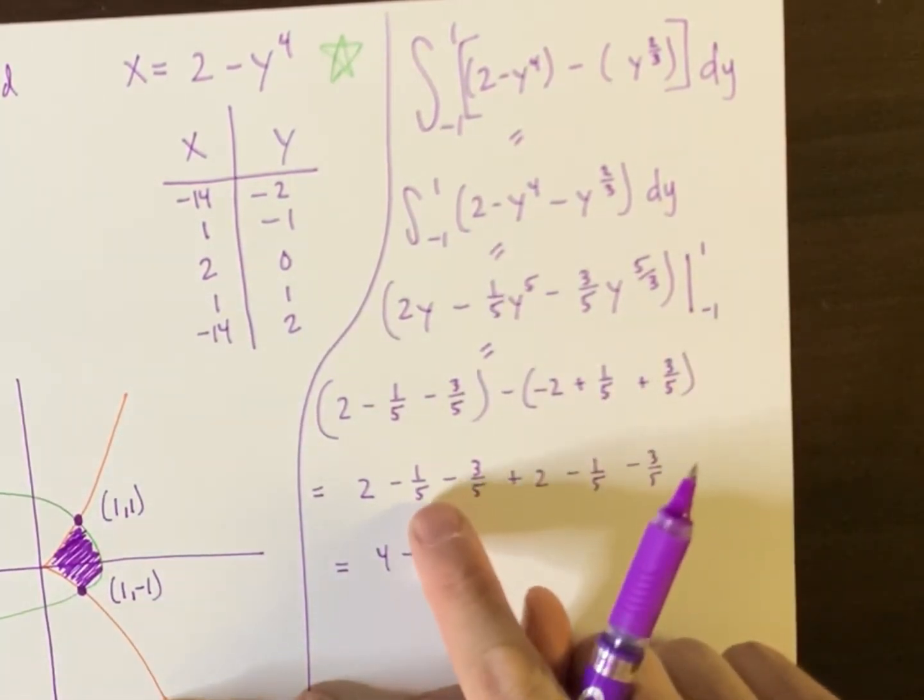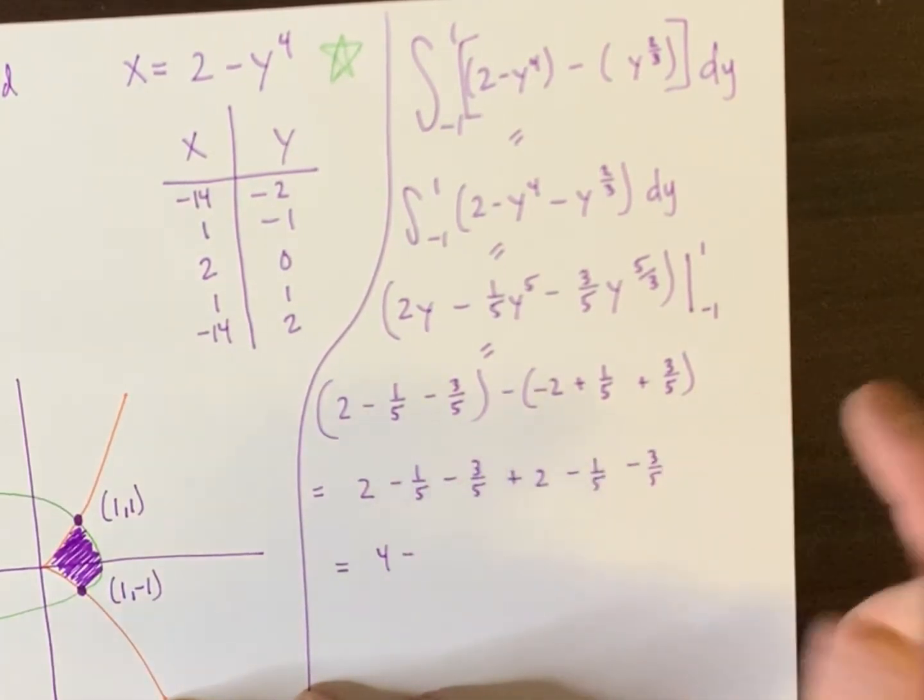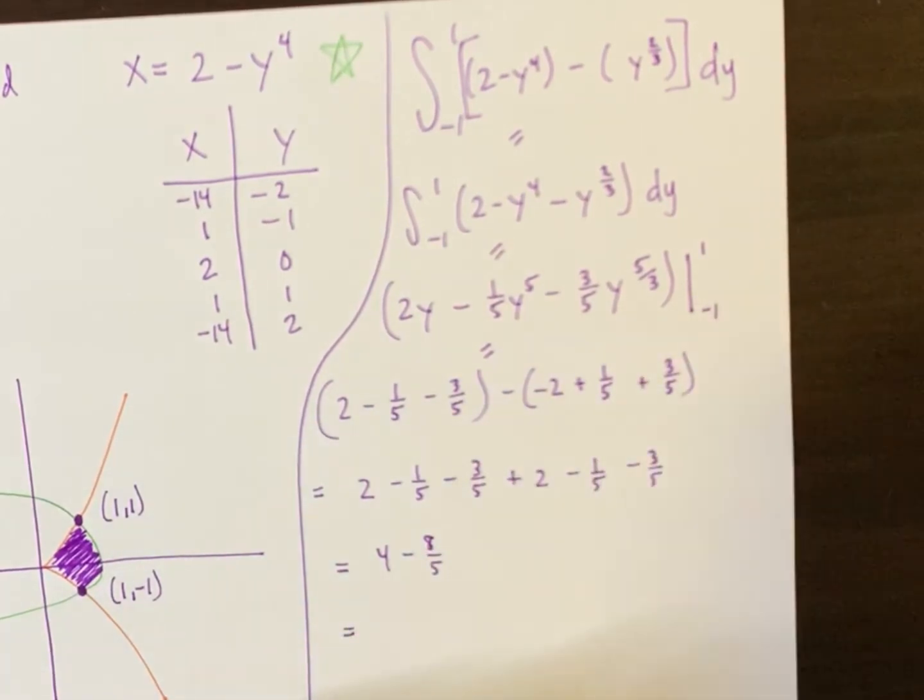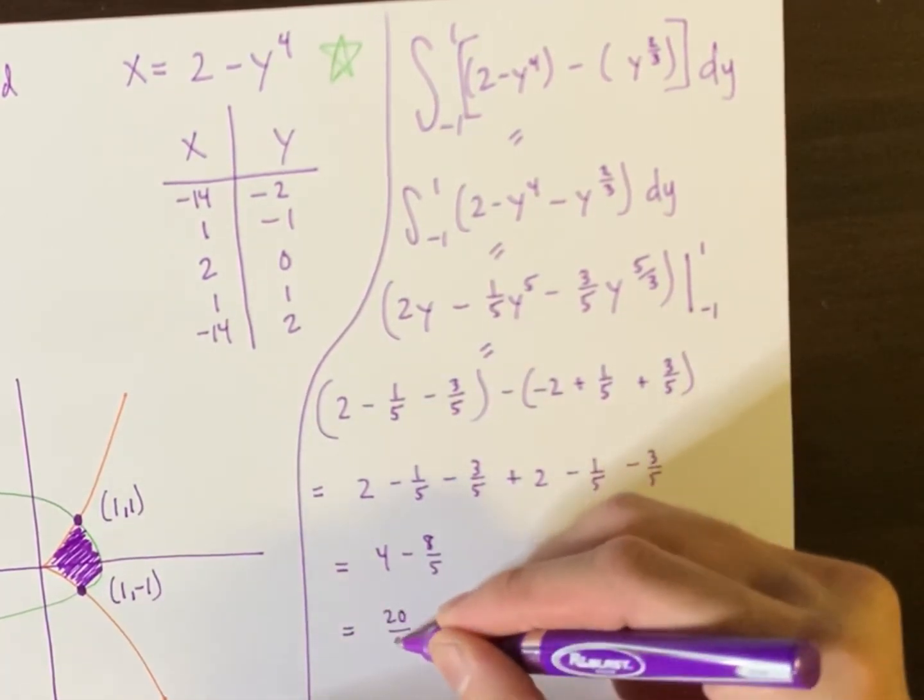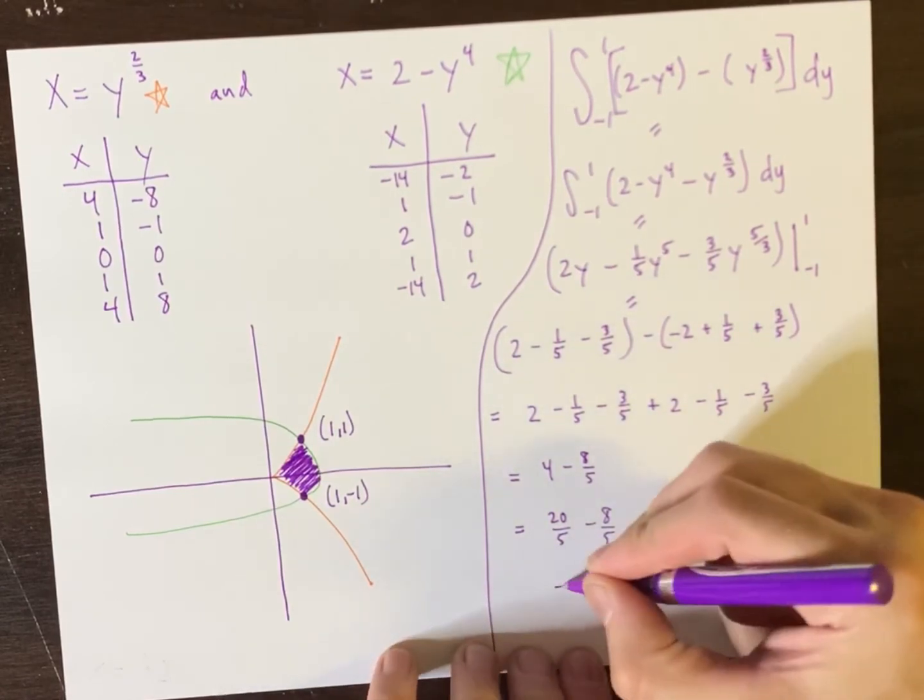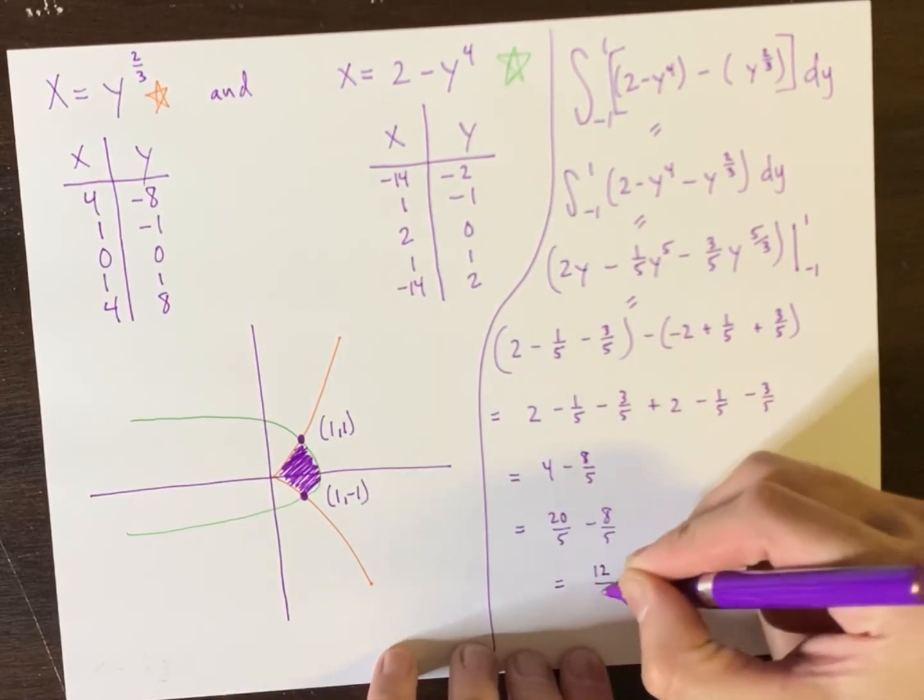So add the twos and then combine the fifths. Actually, let's see. So they all have a common denominator. That's four and four. That's eight. So minus eight fifths. So we have 20 fifths, which is four minus eight fifths. And that, of course, becomes 12 over five.